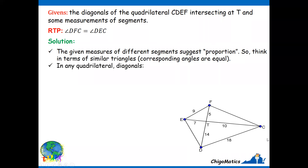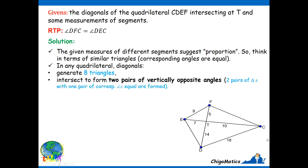In any quadrilateral, we need to note that the diagonals generate eight triangles — please make sure you can count them; there are eight in the quadrilateral you are given. The diagonals intersect to form two pairs of vertically opposite angles. The first pair is this one — they are vertically opposite. The other pair is this one, also vertically opposite.